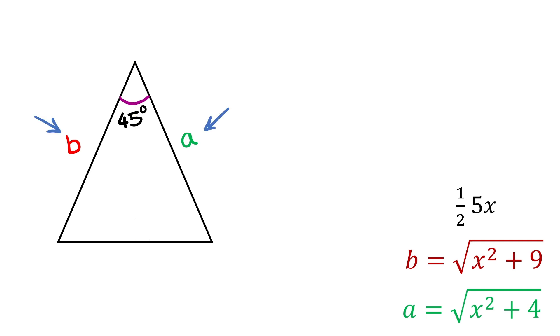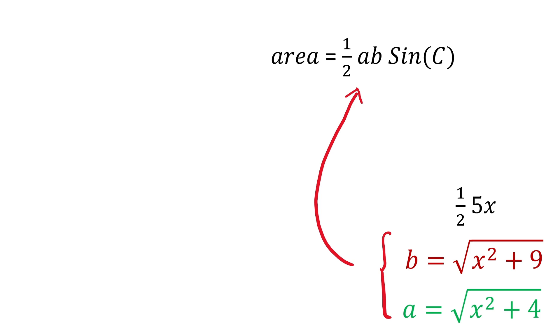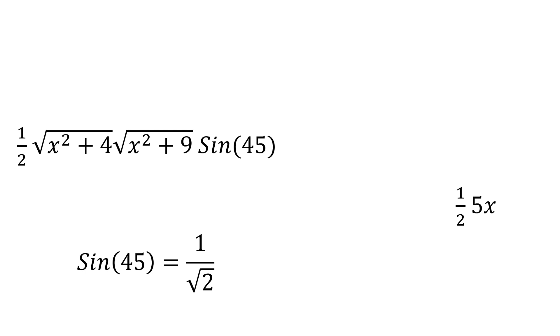Now, here comes the real magic. When we have a triangle, whose this side is a and this side is b, and if this angle is c, then the area of this triangle is given by half times a b times sine of angle c. Substitute a and b from here and put c as 45 degree to get the area of this triangle as this. We have sine of 45 equals 1 over square root of 2. So, put it here.